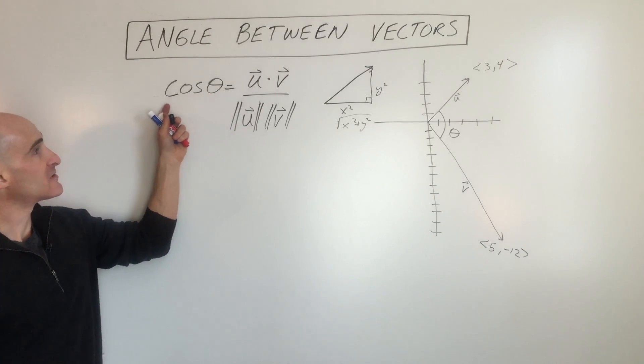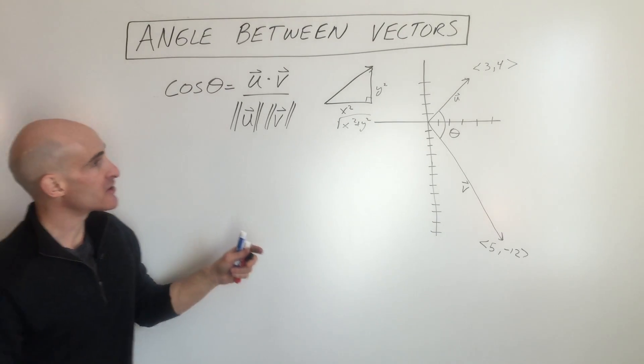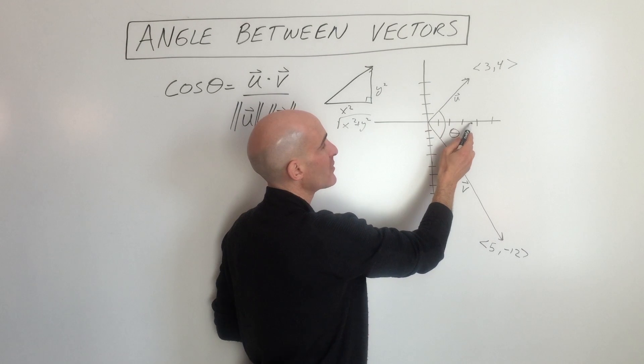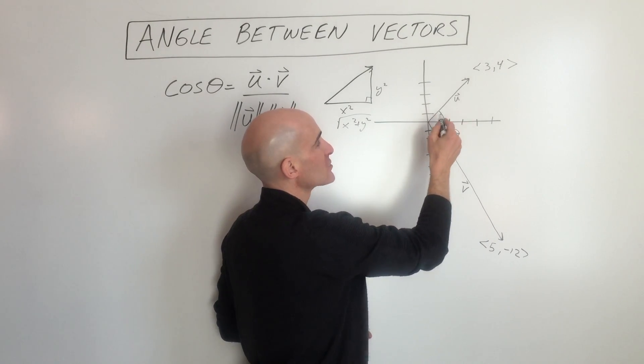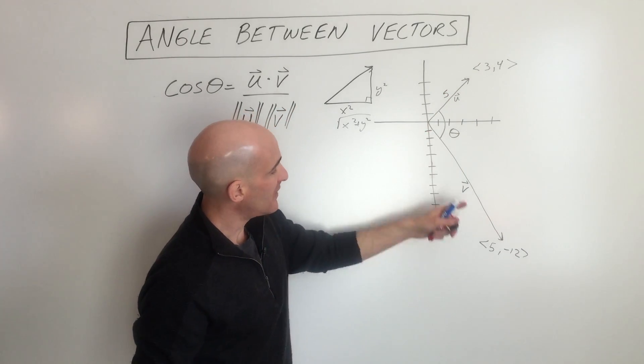Now to find the angle we'll have to end up taking the cosine inverse to get the theta by itself. In our example here we're looking at vector u which is 3, 4, we're going right 3 up 4. So if you do the Pythagorean theorem you're going to find out this has a magnitude of 5.